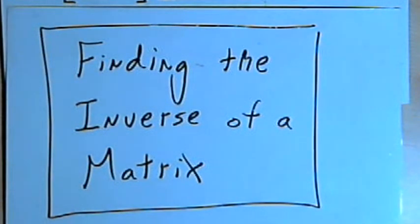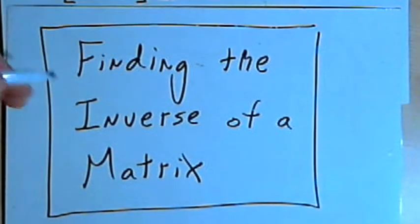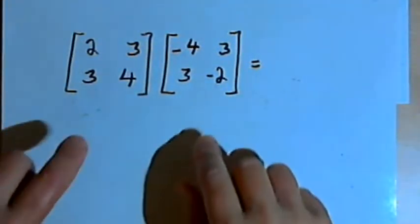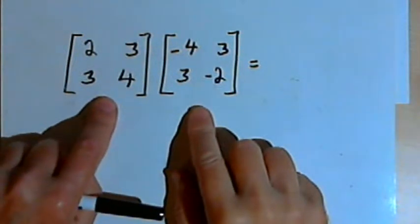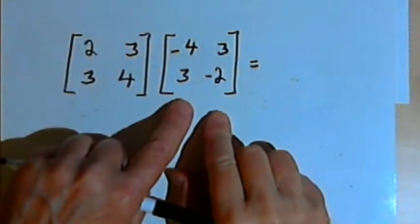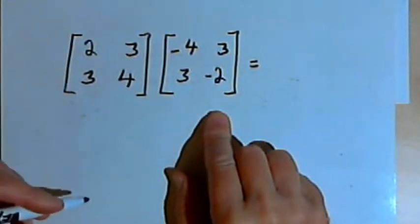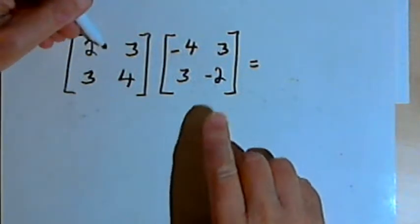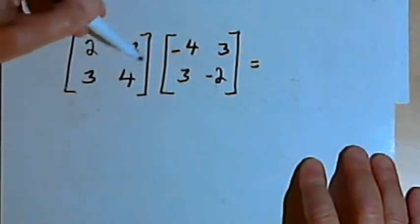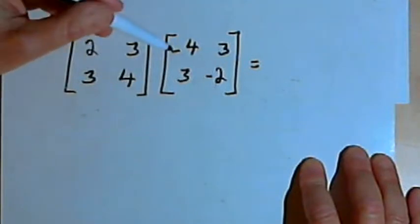This video is provided as supplementary material for courses taught at Howard Community College. In this video I'm going to talk about finding the inverse of a matrix. Just to review: if we have two square matrices with the same dimensions and we multiply them together and get the identity matrix, then we say those two matrices are inverses of each other. I'm going to take these two matrices and see if they are inverses.